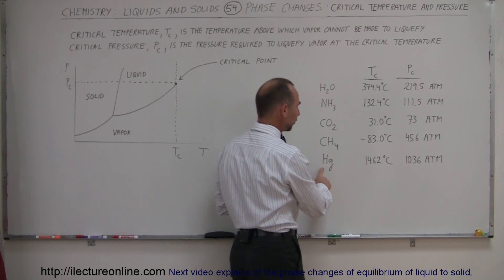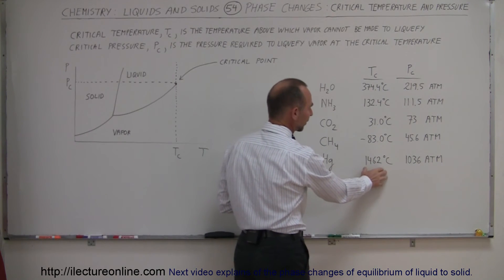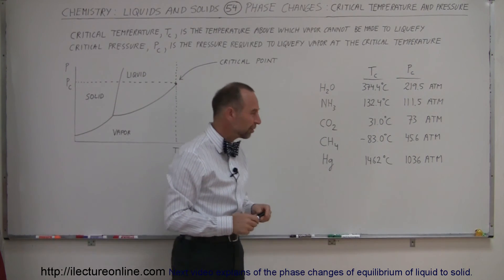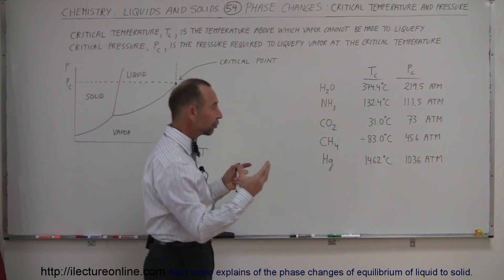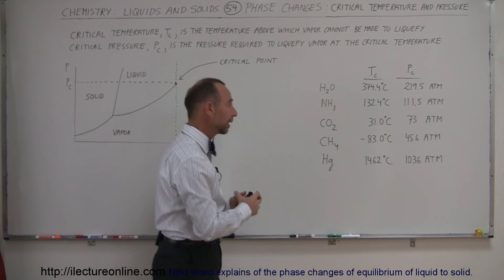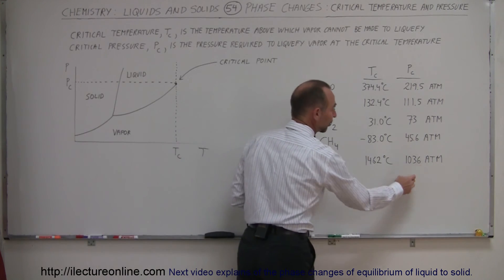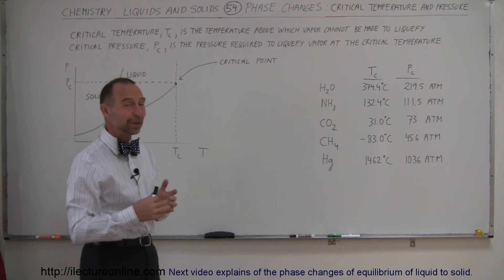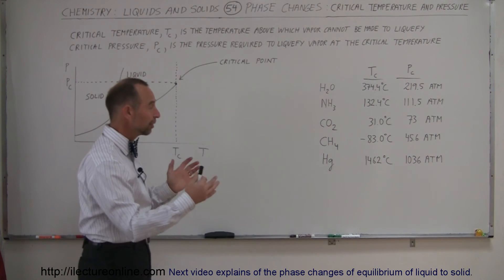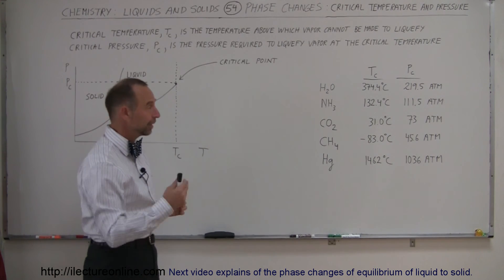And now mercury, this is interesting. Mercury vapor, the critical temperature is 1462 degrees centigrade, very high temperature. But anything beyond that, you cannot turn mercury vapor into a liquid. And notice the critical pressure, 1,036 atmospheres. So those are pretty high pressures and temperatures for these substances to turn from a vapor into a liquid.